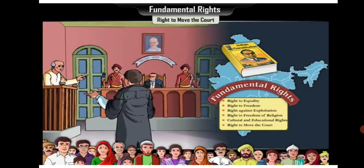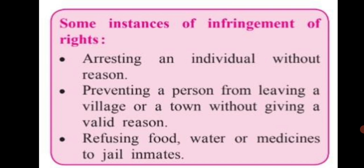The court considers a complaint, investigates it, and if convinced that rights have been infringed upon and injustice has been done to the aggrieved individual, the court gives an appropriate verdict. Examples of infringement of rights include: arresting an individual without reason, preventing a person from leaving a village or town without a valid reason, and refusing food, water, or medicines to jail inmates. What can be done? There are certain writs available as constitutional remedies.